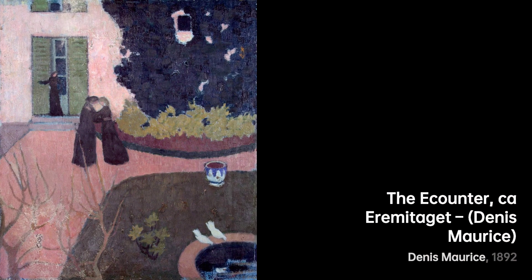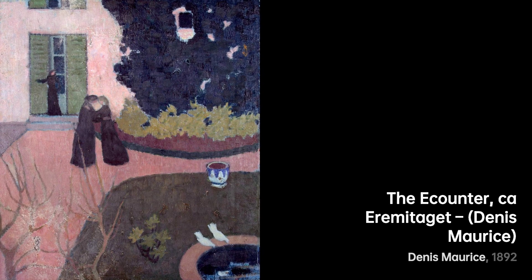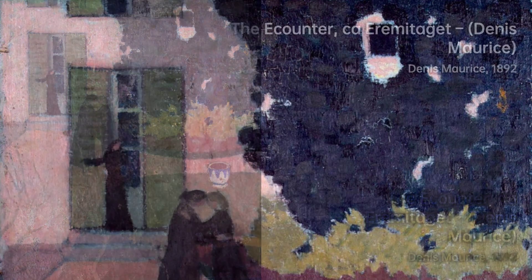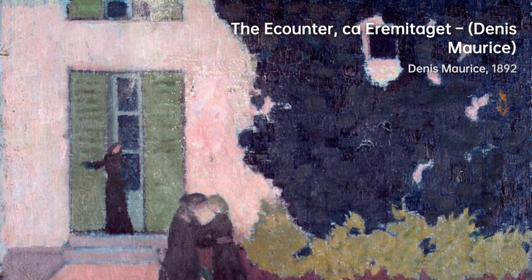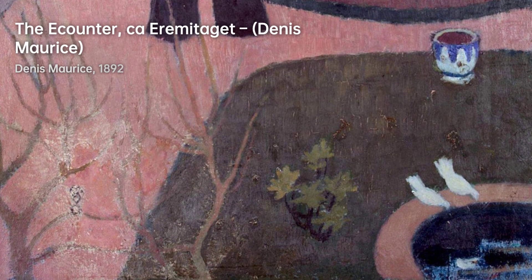Maurice Denis's artistic style evolved over time, reflecting the changing artistic trends. His early works were influenced by Impressionism, characterized by vibrant colors and loose brushwork. As he became involved with Les Nabis, his style shifted toward Symbolism, with an emphasis on expressing emotions and ideas through symbolic imagery. Later in his career, Denis embraced Neoclassicism, creating artworks that drew inspiration from classical forms and subjects.